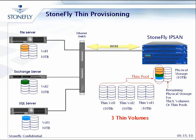The way Stonefly has implemented thin provisioning is: if you look at the same picture shown, if you have 10 terabytes of physical storage space, you create a thin pool — for example, in this case, a thin pool of five terabytes. And from that thin pool of five terabytes, you create all three 10-terabyte volumes. You always need to have a thin pool that the thin volumes reside below. That's how we implement thin provisioning.